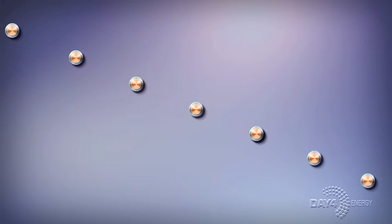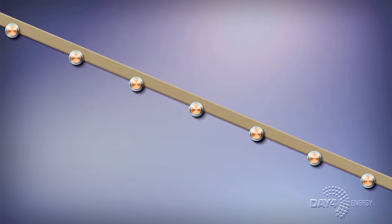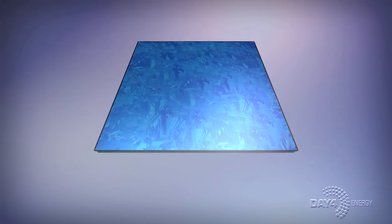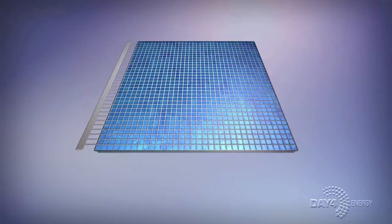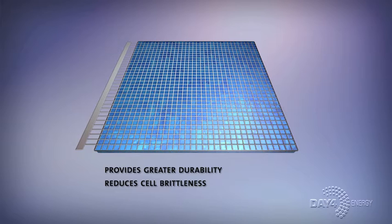These special wires are partially embedded into a thin layer of adhesive that is placed into a polymeric film with one external bus bar along the end. This innovative design provides greater durability and reduces cell brittleness compared to traditional solder-based cells.